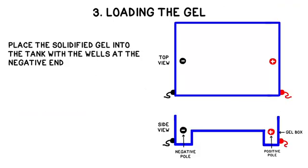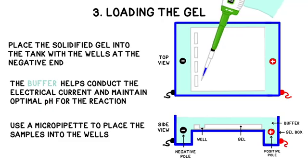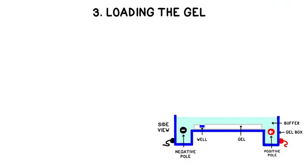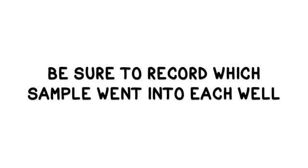Before loading the gel, you first remove the comb, place the solidified gel into a gel box tank with the wells at the negative end, and then cover it with a liquid called a buffer. The buffer will help to conduct the electrical current, and it will also ensure that the pH is optimal for the reaction to occur. Then, to load the samples into the gel, use a sophisticated dropper tool called a micropipette to carefully squirt one sample into each of the wells. The word carefully is important, because it's pretty easy to accidentally poke a hole in the gel with the tip of the micropipette, and then the sample will leak out. It's also easy to get the samples mixed up, so it's important to write down which substance went into which well.